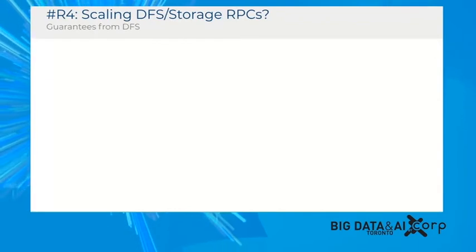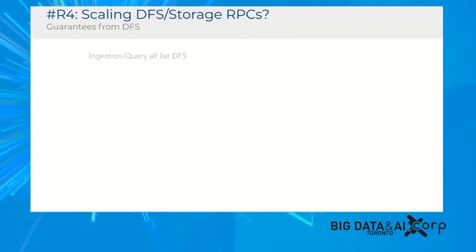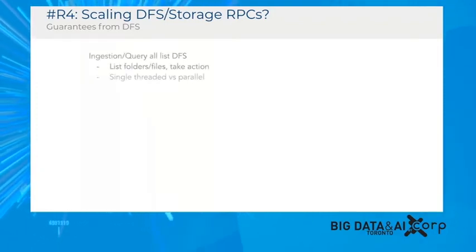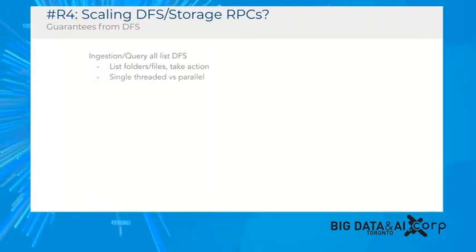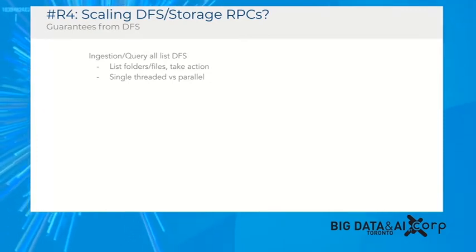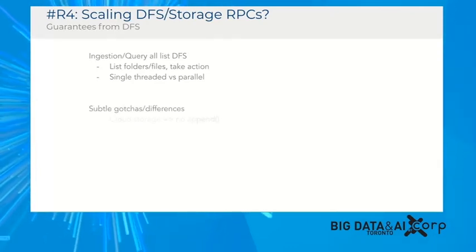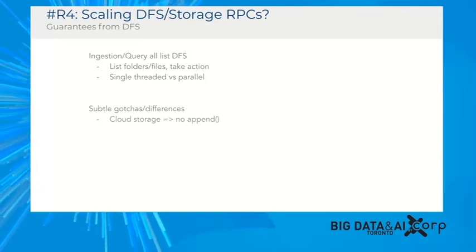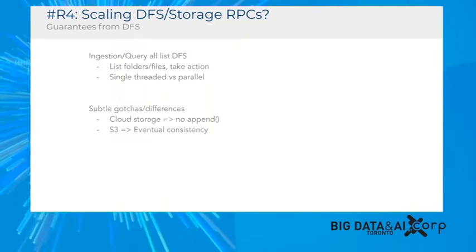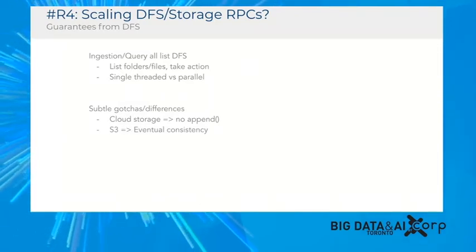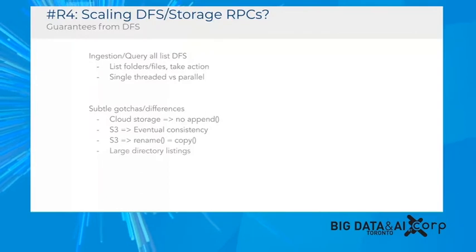The next requirement is around scaling the distributed file system. Any ingestion or query asks the file system what files are available in a folder, then goes to list them — this could be single-threaded or multi-threaded. Some cloud storage systems don't have appends. In S3, listing is eventually consistent, meaning once you write, you may not get the exact contents back. Additionally, large directory listings are very slow. So how do we get around scaling distributed file systems?